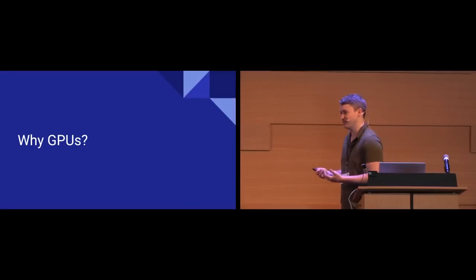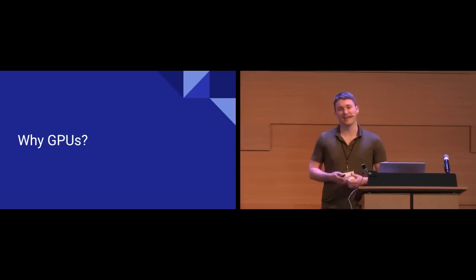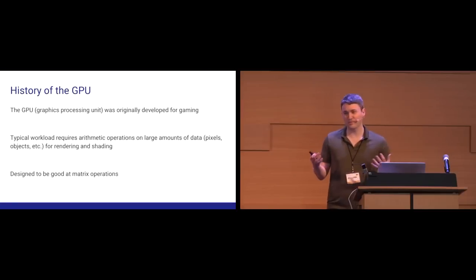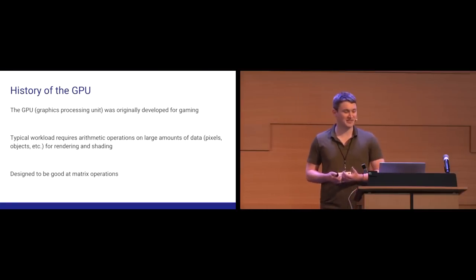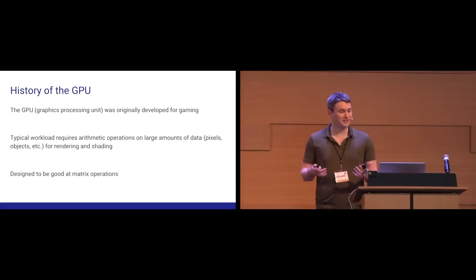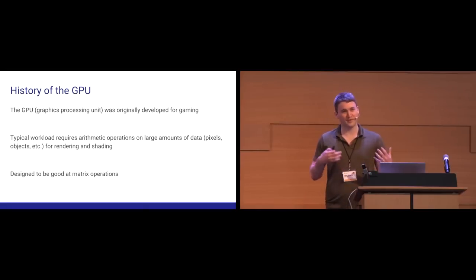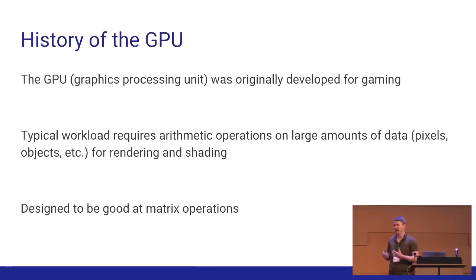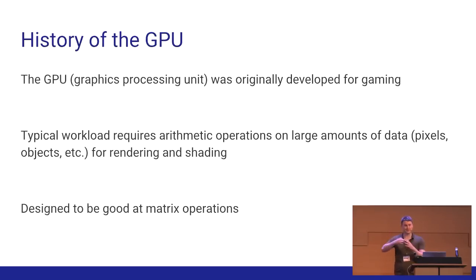This leads us to the question: why am I talking to you about GPUs, and how can they help us combat this problem? A little bit about the history of the GPU — it's a graphics processing unit, originally developed for gaming. The typical workload involves a lot of arithmetic on pixels, or objects in a frame for rendering and shading. It's specialized for matrix operations, since a scene in a game can be represented as a 2D or 3D matrix of pixels with transformations applied.